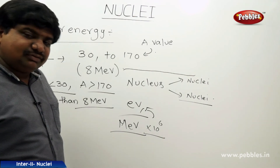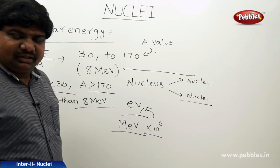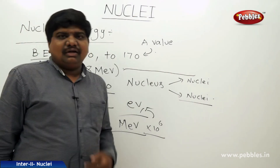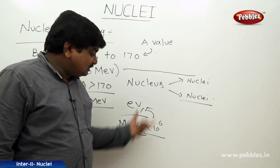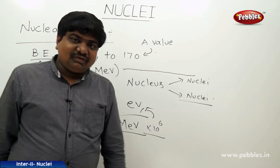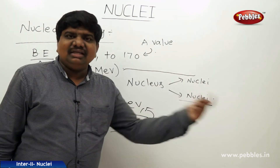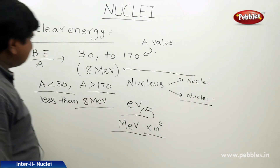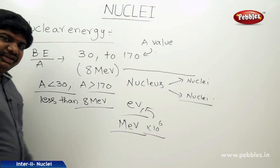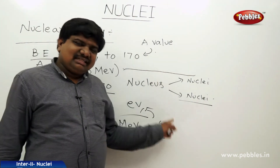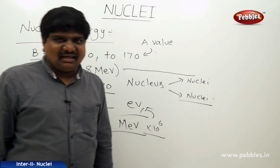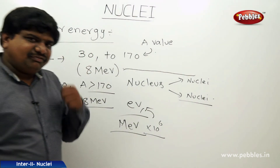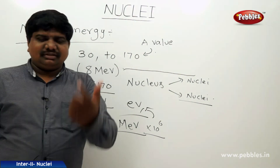If these nuclear reactions are controlled, we can use this energy for the benefit of human beings. If not, it can be used for destruction. Nuclear energy has two types: nuclear fission and nuclear fusion.